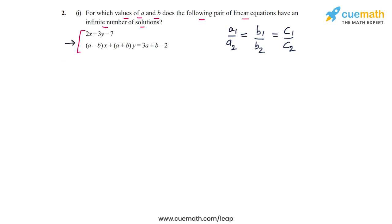From that constraint, we will find the values of A and B. The coefficients of x are 2 in the first equation and (A minus B) in the second equation. So A1 by A2 is 2 by (A minus B).